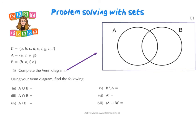Okay, let's take a look at this problem involving sets. So we've got the Venn diagram with A and B. And we're told that in A, there's A, C, E, and G. And in B, there's B, D, F, and H.